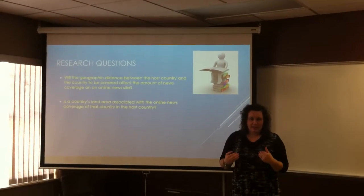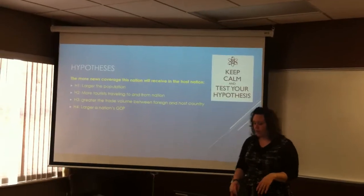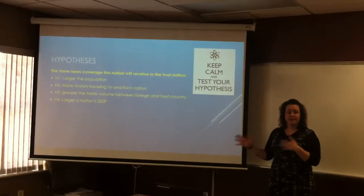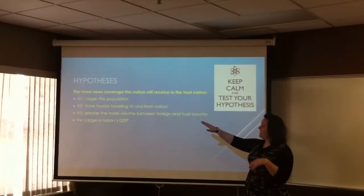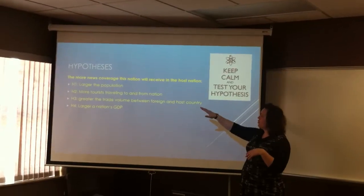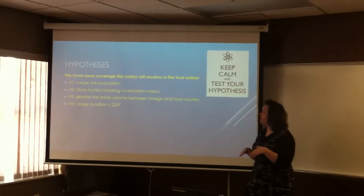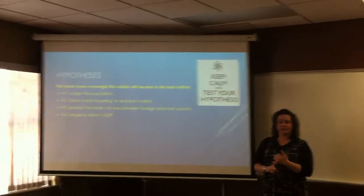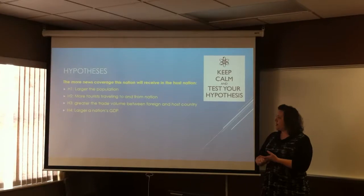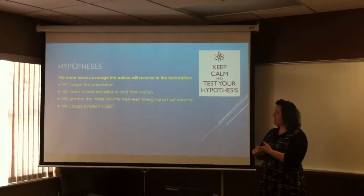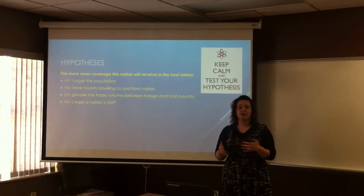Wang went a little further and instead of just a couple of hypotheses, he has nine. These are his dependent variables — basically, do these things affect how much news coverage a particular nation receives in Australian media? The first hypothesis is whether the country has a large population. Second, are there more tourists to that country? Third, is there a greater trade volume between Australia and the foreign country being covered? And the fourth is whether the nation has a large gross domestic product.